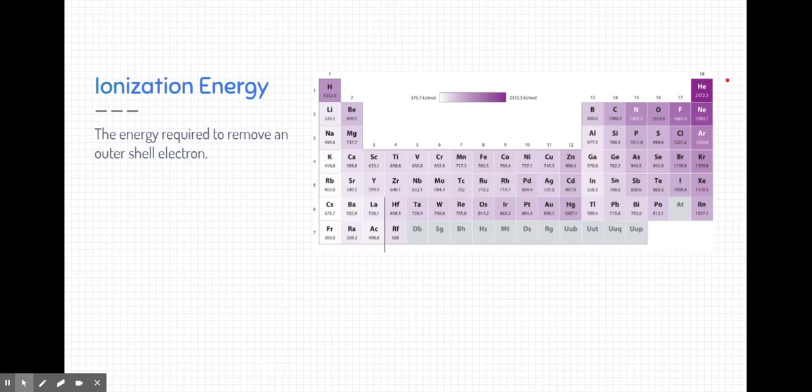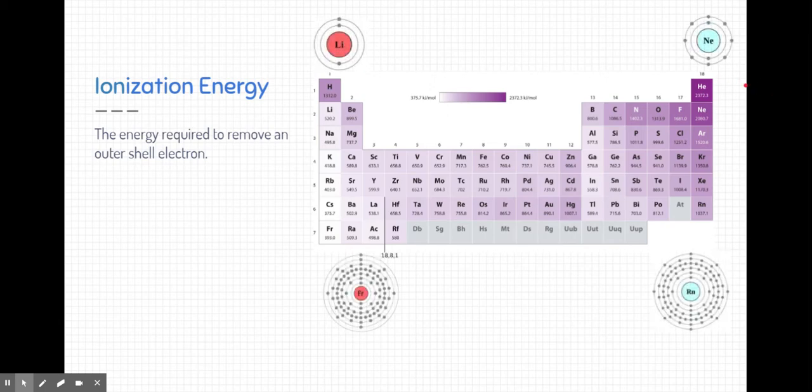Let's look at another trend, ionization energy. Ionization energy is the energy required to remove an outer shell electron. You might remember we drew Bohr models of elements, and here's a few Bohr models based on the different sections of the periodic table.